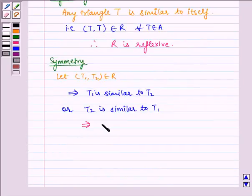This implies (T2, T1) ∈ R. Therefore, R is symmetric.